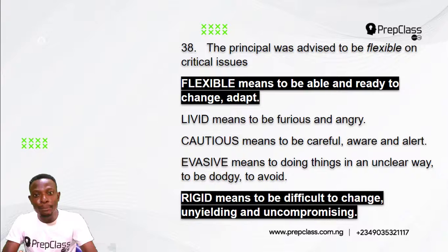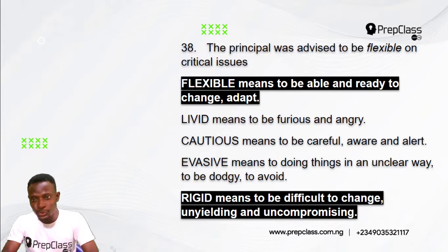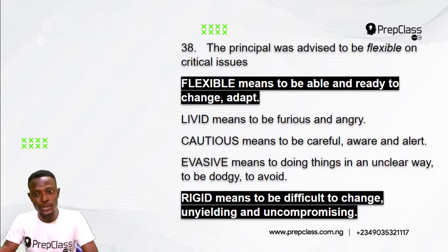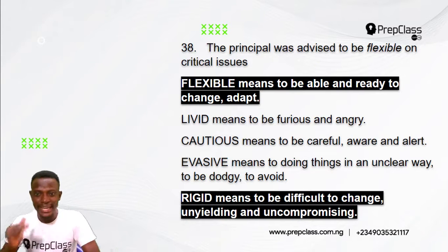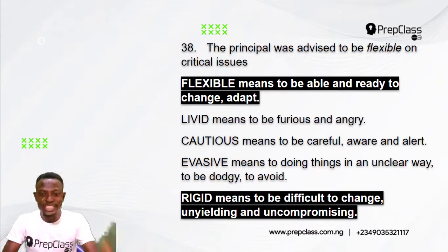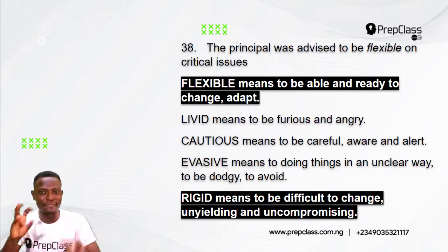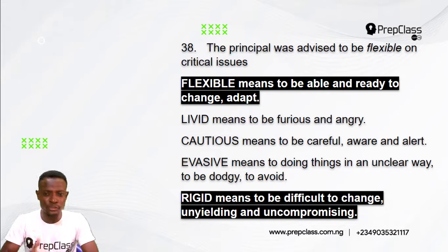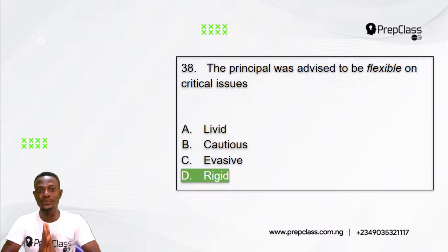When you are flexible, it means to be able and ready to change and adapt. Option A, livid, means to be furious and angry. Option B, cautious, means to be careful, aware, and alert. Option C, evasive, means doing things in an unclear way — to be dodgy, to avoid. The opposite meaning to 'flexible' is rigid — difficult to change, unyielding and uncompromising. So the answer is option D, rigid.